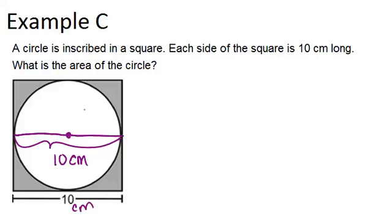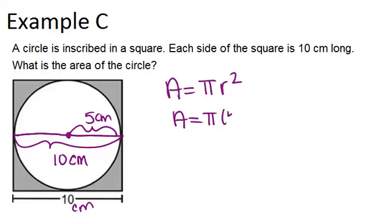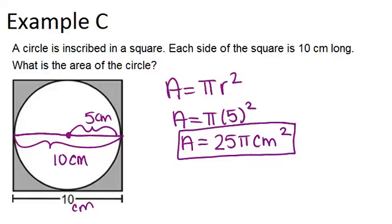So if the diameter is 10, that means that the radius is 5 centimeters. So to find the area of the circle, you just have to do pi times the radius squared, which in this case would be pi times 5 squared, which gives you an answer of 25 pi centimeters squared. Again, don't forget those square units for area.